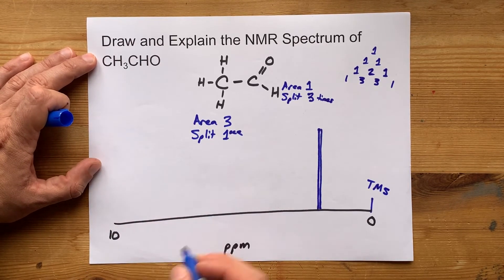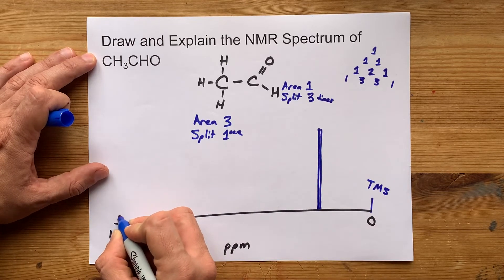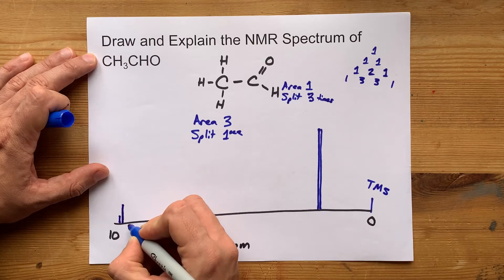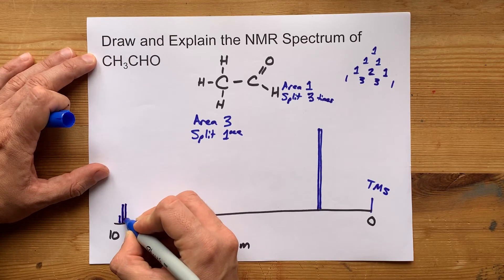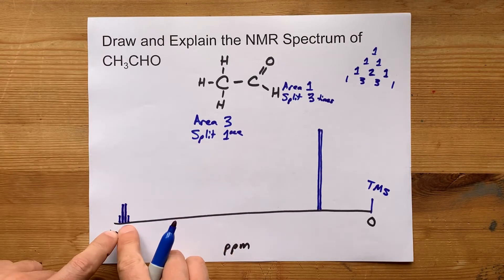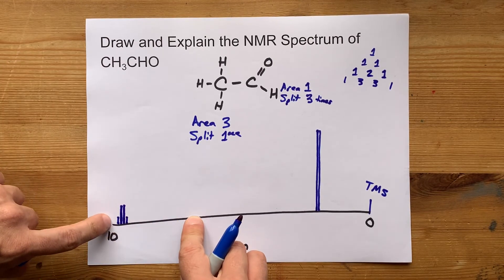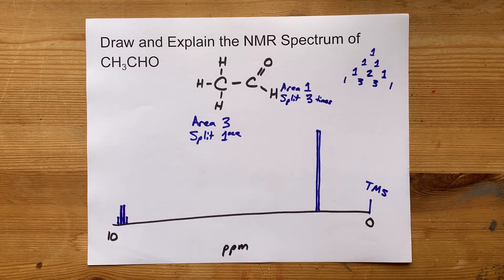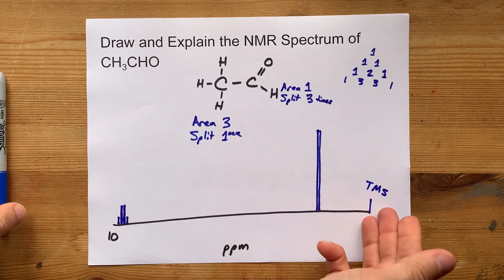I'm going to put it closer to 10. The arrangement that I need is a little stub, another stub that's three times as tall as that one, then another one that's equal in height to the tall one, and another little stub. The idea is that the relative heights here are 1 to 3 to 3 to 1. Cool! So this is your NMR spectrum.